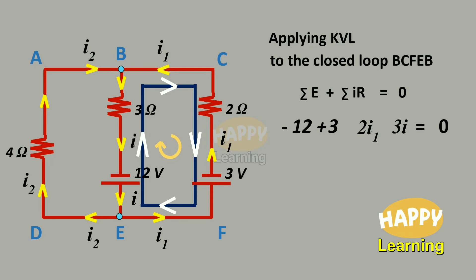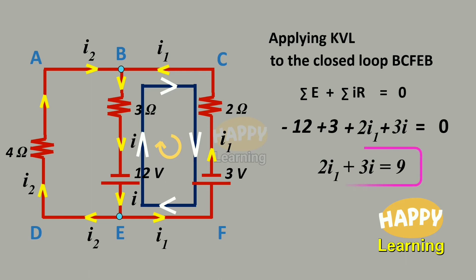At the 2-ohm resistor, we are moving opposite to the current direction I1, so it should be plus 2I1. At the 3-ohm resistor, we are also moving opposite to the current direction, so applying sign convention it should be positive — plus 3I. On further simplification, this equation becomes 2I1 plus 3I equals 9. Let it be equation number 3.